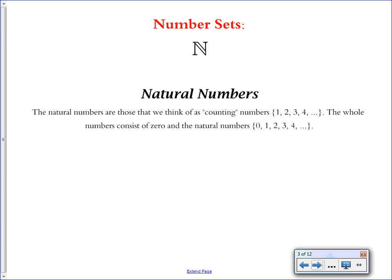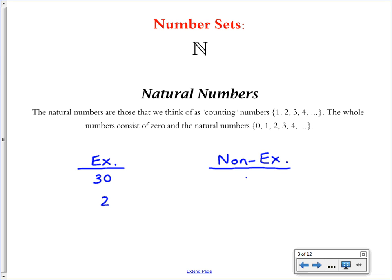Natural numbers are those numbers that you first learn when you're a child: 1, 2, 3, 4, 5 — the ones you can count on your fingers. For each of these, I'm going to show a couple of examples and then non-examples. Examples of natural numbers would be 30 or 2. Non-examples would be 0, because 0 is not technically part of the natural numbers — it is part of whole numbers. Any negative number is also a non-example, as well as any decimal number like 3.5.